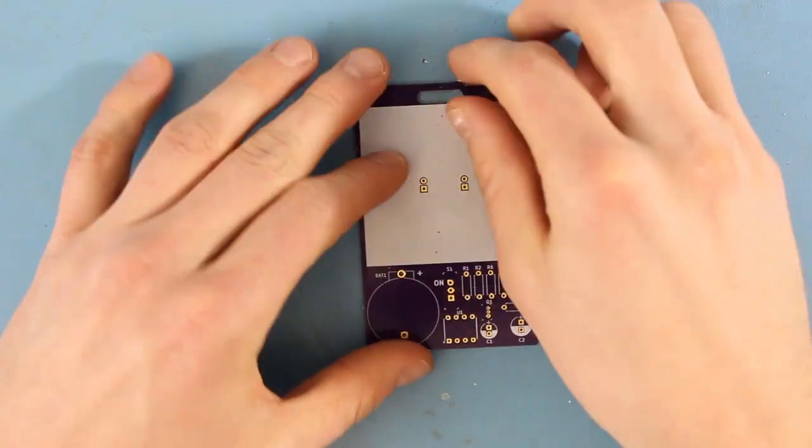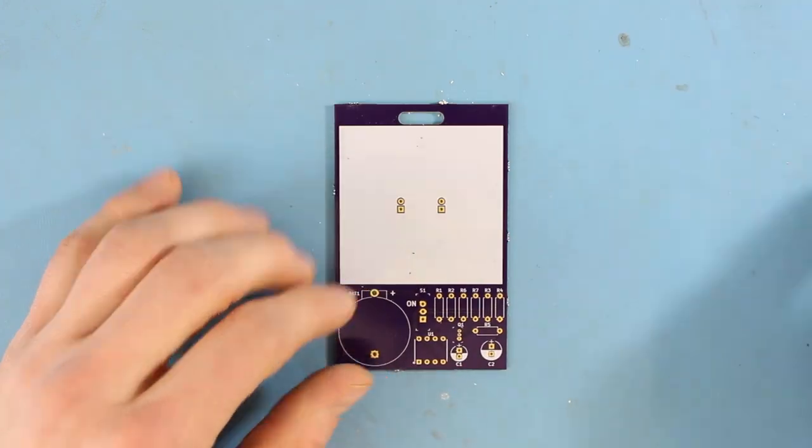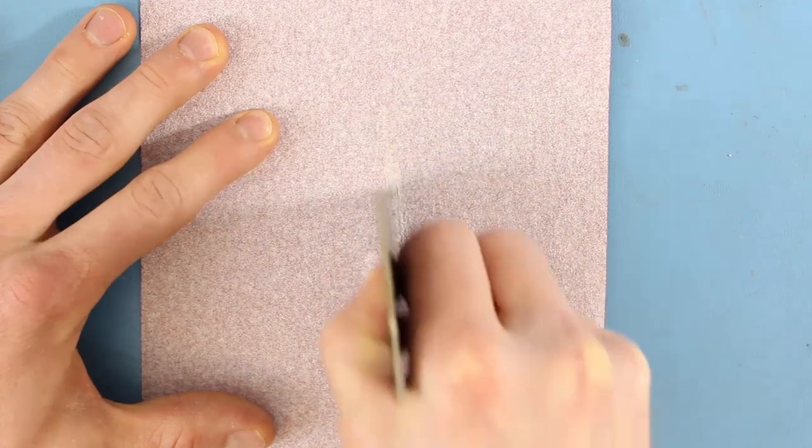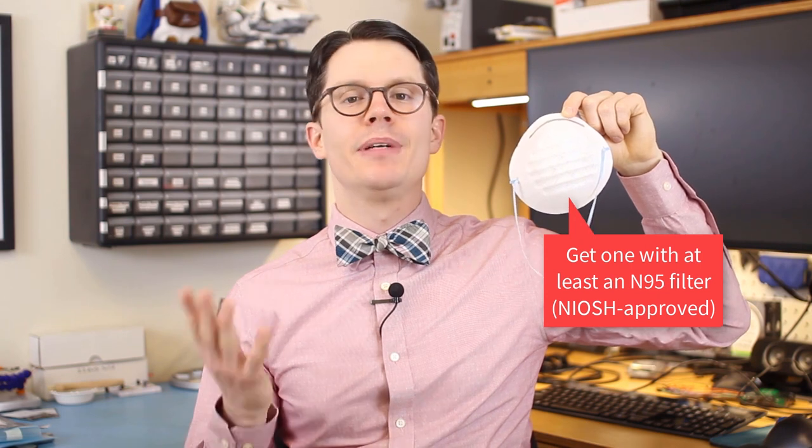Because the dust from most PCBs can be harmful, it's recommended that you sand in a well-ventilated area while wearing some kind of respiratory protection. One of these cheap masks with at least an N95 filter should be sufficient, at least according to the MSDS datasheet for FR4 material.